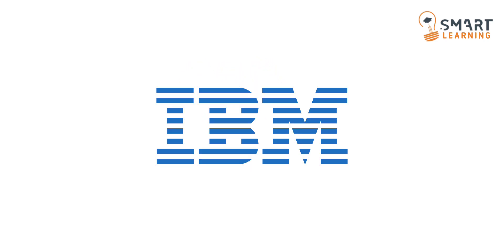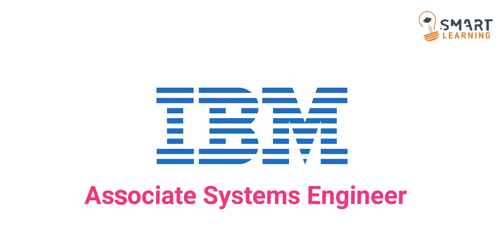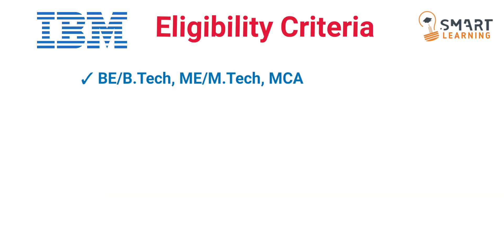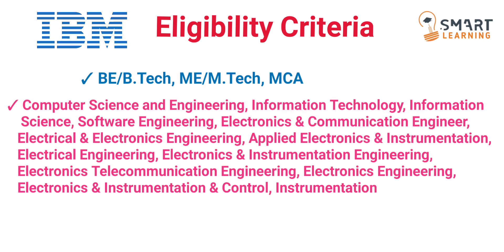Let's get started. IBM is hiring for the Associate Systems Engineer role. The eligible degrees are B.E or B.Tech, M.A or M.Tech, and MCA. From B.Tech, the eligible domains are CSE, IT, ECE, and EEE. There are some other domains also from the remaining qualifications — you can refer to those on the screen. The job location is Bangalore, and this is a full-time opportunity.